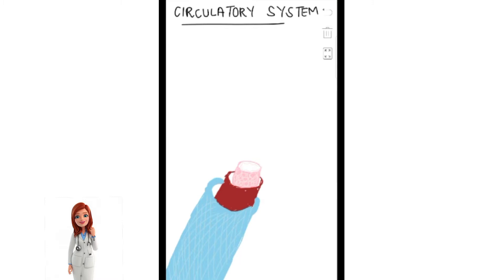Assalamu alaikum everyone, I hope all of you are fine. The topic of today's discussion about general anatomy is the circulatory system. You can find it in chapter number six. Let's start with the general structure of blood vessels.